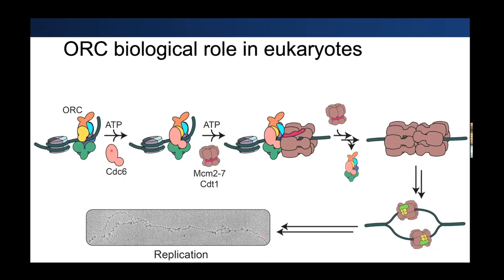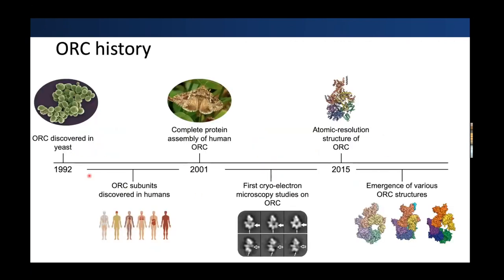A lot of these steps have been investigated over the years. I want to give you a brief history of ORC from a structural biology standpoint — going back to 1992 when the complex was discovered in yeast. This was actually discovered here at Cold Spring Harbor Laboratory by Dr. Bruce Stillman, who we collaborate with. Through the 90s, the ORC subunits were further discovered in humans and other species, showing it's a prevalent complex among eukaryotes.